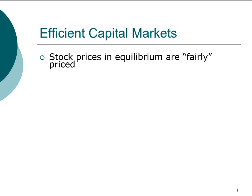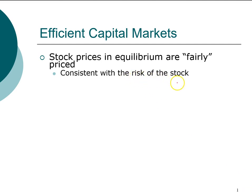One of the assumptions of the efficient market hypothesis is that stock markets — the price for stocks in equilibrium — should be fairly priced. We say that the stock price is fair if the return is consistent with the risk of the stock.